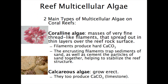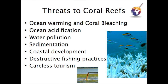Two main types of multicellular algae on coral reefs are coralline algae and calcareous algae. Threats to coral reefs include ocean warming and coral bleaching, ocean acidification, water pollution, sedimentation, coastal development, destructive fishing practices, and careless tourism.